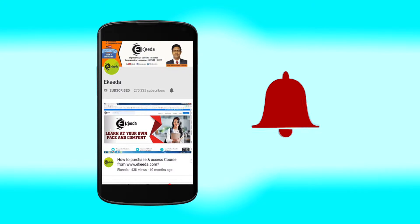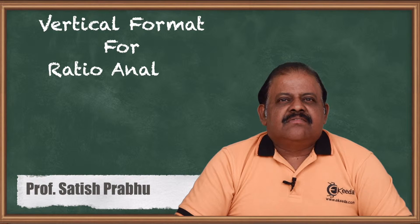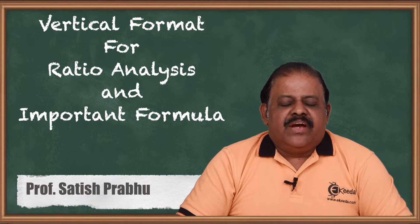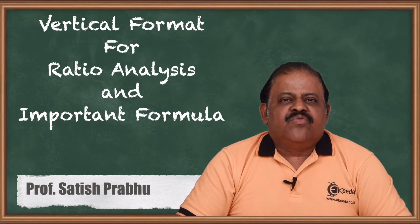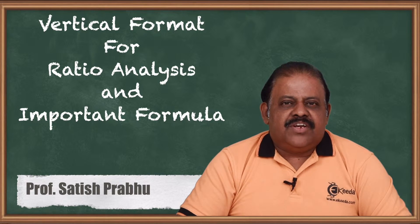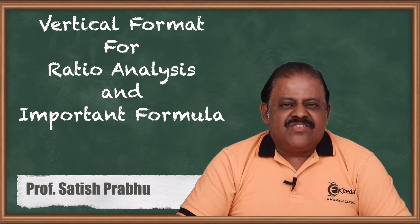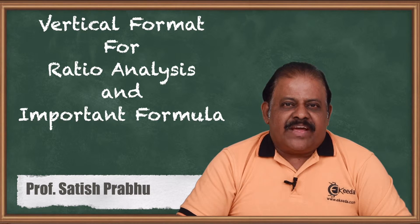In the chapter of ratio analysis, we are required to arrange the profit and loss account as well as the balance sheet in a vertical format, which is suitable for calculation of ratios. Today we'll understand how to arrange the balance sheet and income statement in vertical format and what are the important ratios required in the chapter of ratio analysis.